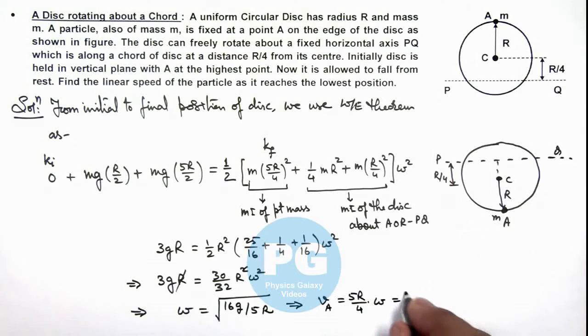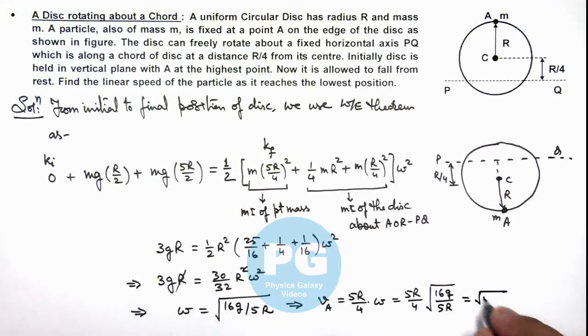So this is 5R by 4 multiplied by root of 16g by 5R, which is finally giving us root of 5gR. That is the result of this problem.